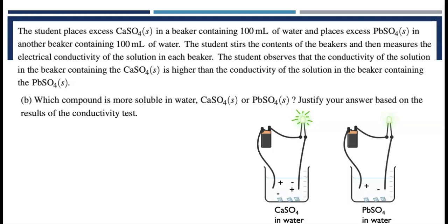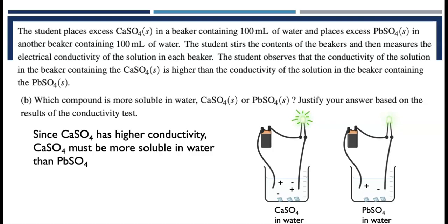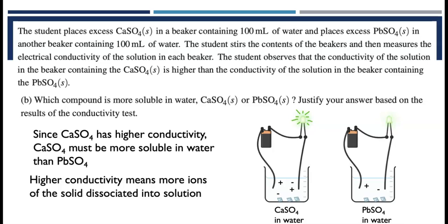So the calcium sulfate has a higher conductivity than the lead-tooth sulfate sample. So I've shown the bulb for the calcium sulfate being brighter. Since the calcium sulfate has a higher conductivity, the calcium sulfate must be more soluble in water. There must be more ions of the solid calcium sulfate that went into solution than went into solution for the lead-tooth sulfate.